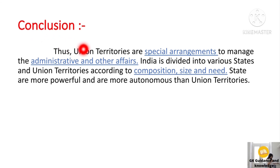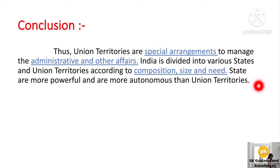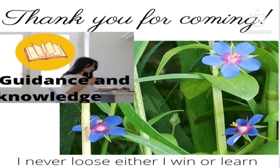In conclusion, union territories are special arrangements to manage administrative and other affairs. India is divided into various states and union territories according to composition, size, and need. States are more powerful and more autonomous than union territories, but union territories are important as well.